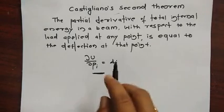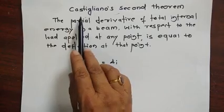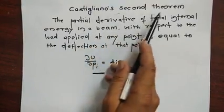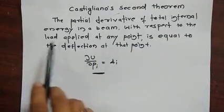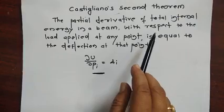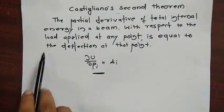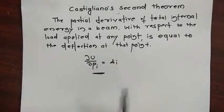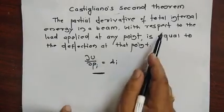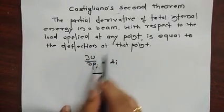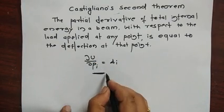Welcome dear students to Agrawal's technical academy. Today we will learn Castigliano's Second Theorem. The theorem states that the partial derivative of the total internal strain energy in a beam with respect to the applied load at any point is equal to the deflection at that point. So: ∂U/∂P = δᵢ.